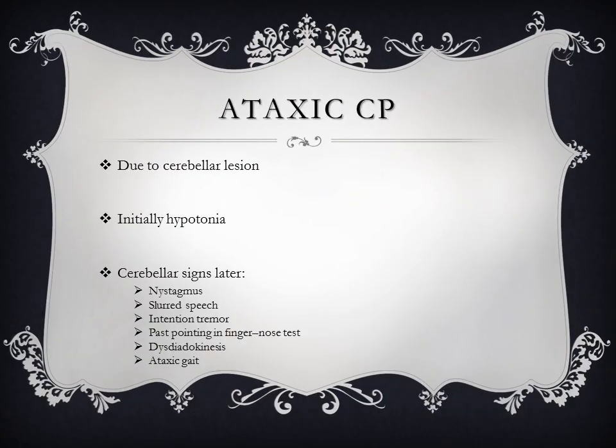Ataxic cerebral palsy occurs due to damage to the cerebellar area. Initially patients usually present with hypotonia; cerebellar signs typically manifest later and include nystagmus, slurred speech, intention tremor, past pointing in finger-nose test, dysdiadochokinesis, and ataxic gait. Please watch the video on a child with ataxic cerebral palsy.